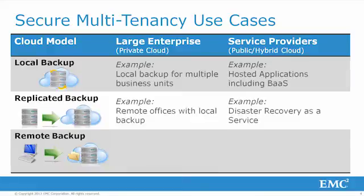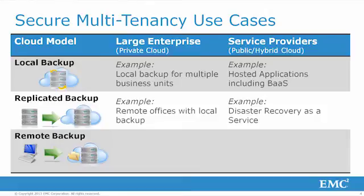Next is replicated backup. For a large enterprise, this is likely to protect multiple remote sites that have a small local data domain system and each one replicates into the main data center. For a service provider, this is what we refer to as DR as a service, where the customer has a local data domain system on site and replicates to the service provider site, usually because they do not have their own DR facility.